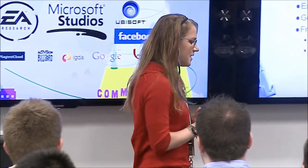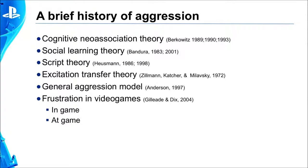I started thinking about rage quitting when I was working on my dissertation. In the literature, there's a lot of focus on aggression. There's the cognitive neo-association theory, which has to do with adverse events that stimulate thoughts and feelings associated with fight or flight. There's social learning theory, which postulates that we learn how to be aggressive either through observation of other people's aggression or through direct interaction with other aggressive people.